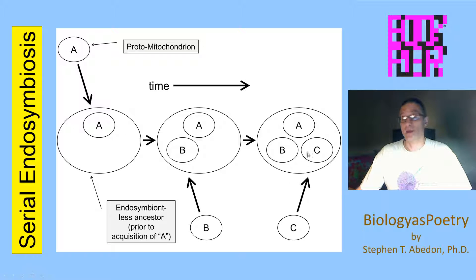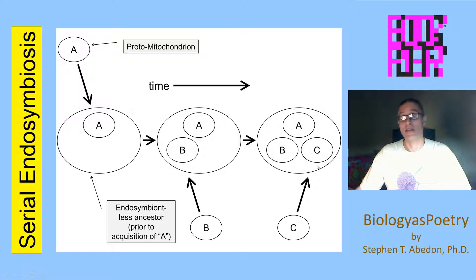Conceivably, there can be additional endosymbionts that can be acquired, and this is being shown with individual C — another cell that is being acquired by the original cell. Thus this original cell now contains three endosymbionts: A, B, and C.